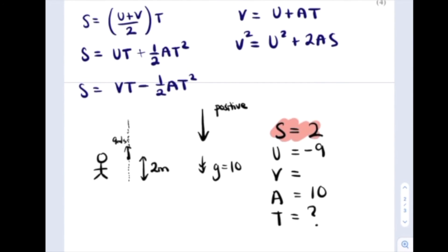Looking at these, I've got S, I've got U, I've got A, and I want T. I'm going to rule out V at this stage. We don't need it. We don't want it. So S is 2, U is minus 9, A is 10, and T is the unknown. So we go for this equation.